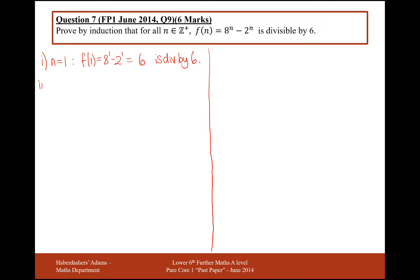Second part, we need to assume true for n equals k. So, therefore, 8 to the k minus 2 to the k is divisible by 6.